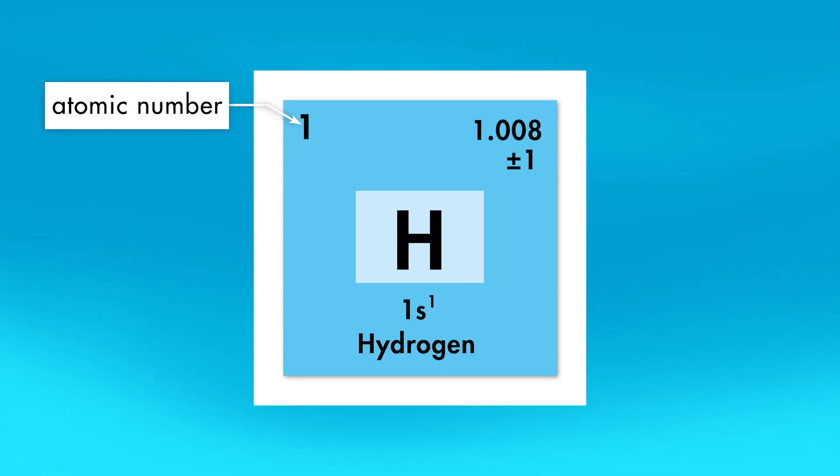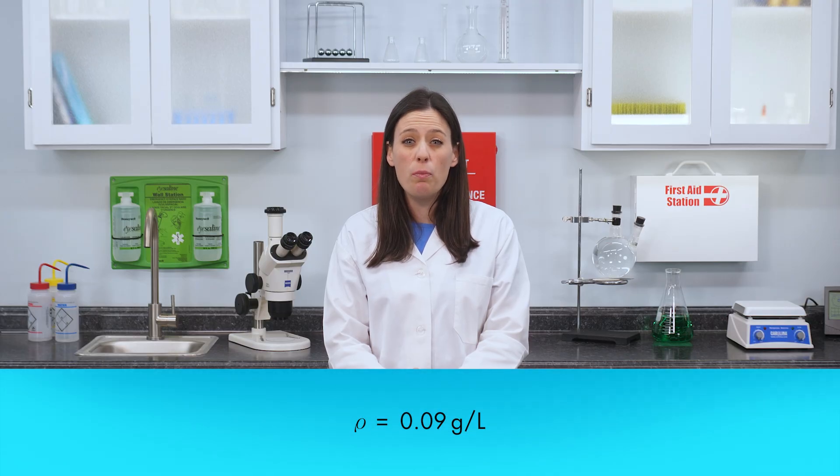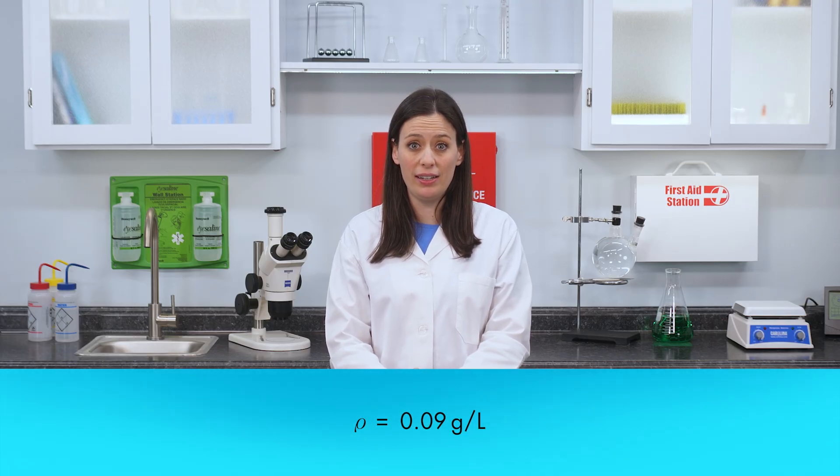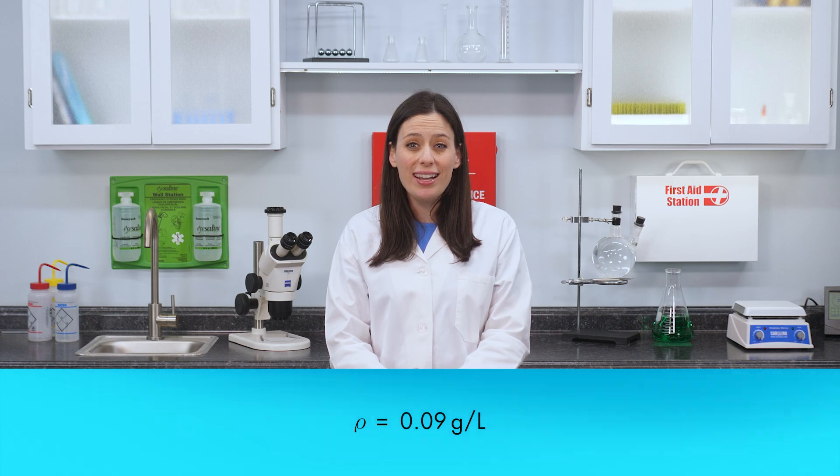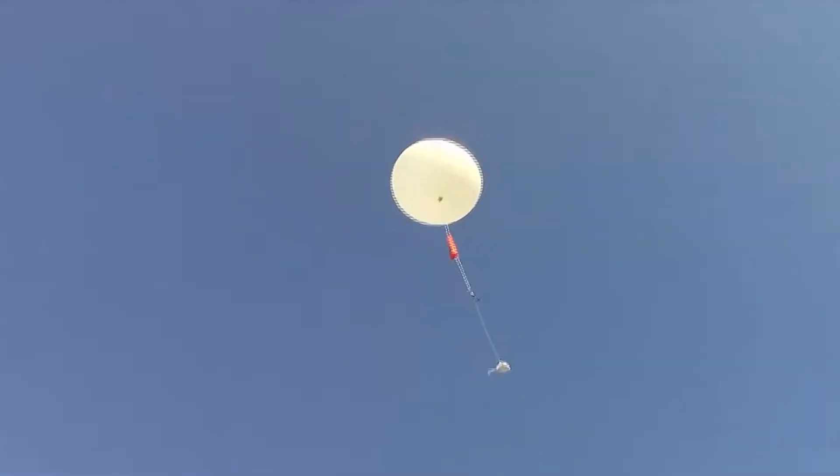The atomic number of hydrogen is 1, which means an atom of hydrogen has 1 proton and 1 electron. The density of hydrogen is only 0.09 grams per liter, which makes it the lightest element on Earth. In fact, the density of hydrogen is only about 7% of the density of air. This property makes hydrogen perfect for inflating weather balloons.